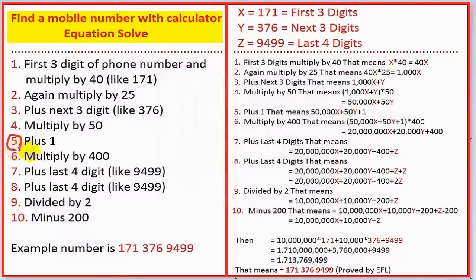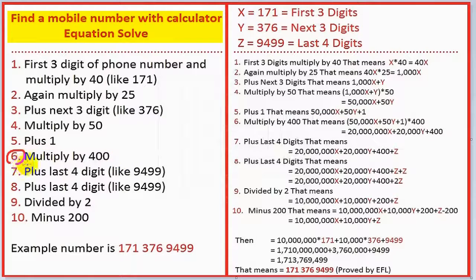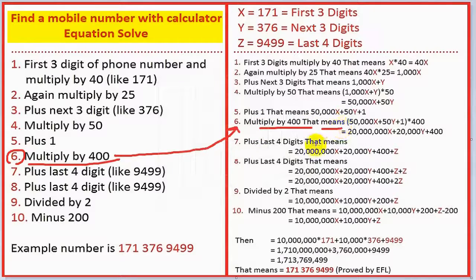Step five: plus one, so the result is 50,000x plus 50Y plus 1. Step six: multiply by 400, giving the new result based on that expression multiplied by 400.